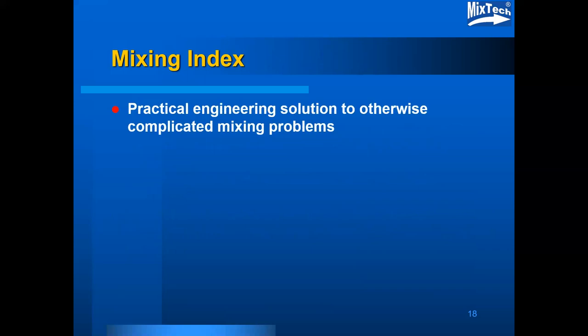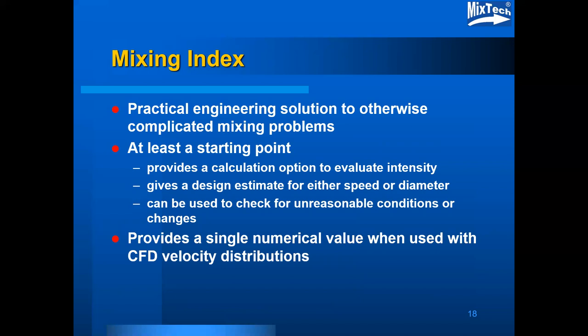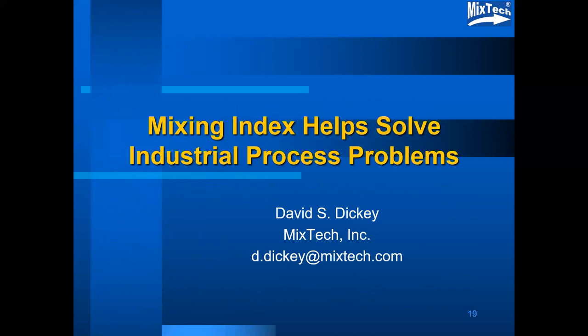A mixing index is a practical engineering solution to otherwise complicated mixing problems. It provides a calculated option to evaluate mixing intensity, gives a design estimate for either speed or diameter when creating new equipment, and can be used as a check for unreasonable conditions or changes. The mixing index provides a single numerical value when used with CFD velocity distributions and, most importantly, it's a practical way to help solve many industrial mixing process problems. Thank you.